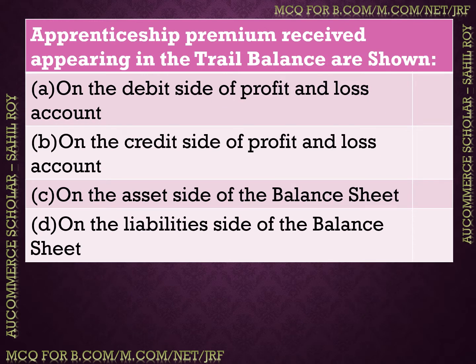The next question: apprenticeship premium received appearing in the trial balance — where is it shown? Options: (A) on the debit side of profit or loss account, (B) on the credit side of profit or loss account, (C) on the asset side of balance sheet, (D) on the liability side of balance sheet. The correct answer is Option B — on the credit side of the profit or loss account.